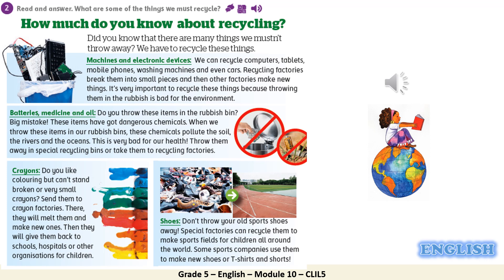Recycling factories break them into small pieces and then other factories make new things. It's very important to recycle these things because throwing them in the rubbish is bad for the environment. Batteries, medicine, and oil — do you throw these items in the rubbish bin? Big mistake. These items have got dangerous chemicals. When we throw these items in our rubbish bins, these chemicals pollute the soil, the rivers, and the oceans. This is very bad for our health. Throw them away in special recycling bins or take them to recycling factories.